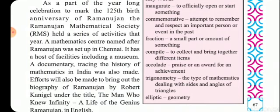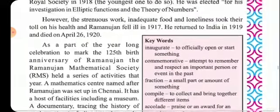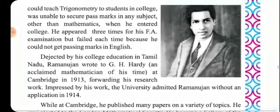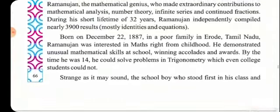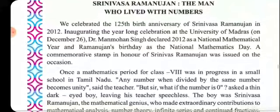Efforts were also made to bring out the biography of Ramanujan by Robert Kanigel, titled 'The Man Who Knew Infinity: A Life of the Genius Ramanujan,' in English. Srinivas Ramanujan lived only 32 years, but his extraordinary talent in mathematics left a lasting legacy for the world.